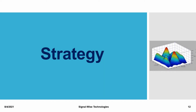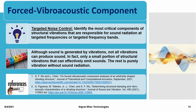Once we have validated the reconstructed vibroacoustic quantities, we will discuss the strategy of how to apply targeted control to reduce dishwasher noise. The main idea of targeted noise control is to identify the most critical components of structural vibrations, known as FVAC, which are responsible for sound radiation at targeted frequencies or targeted frequency bands. The reason why FVAC analysis is important is that although sound is generated by vibrations, not all vibrations can produce sound.